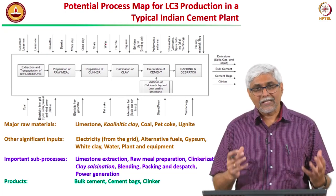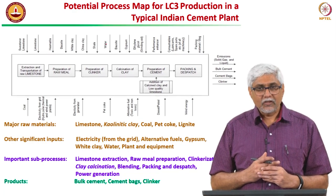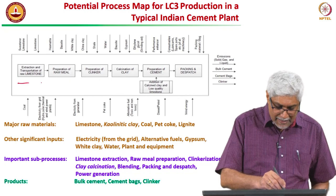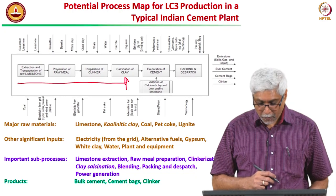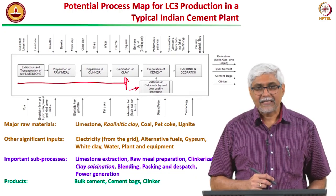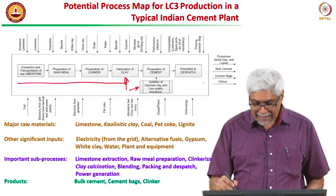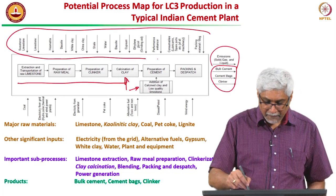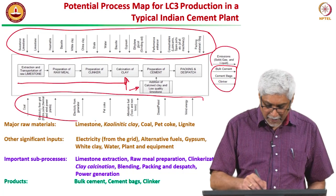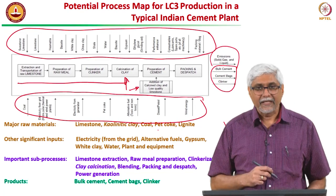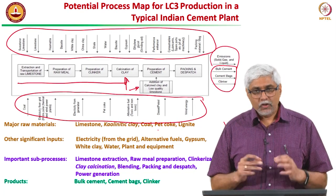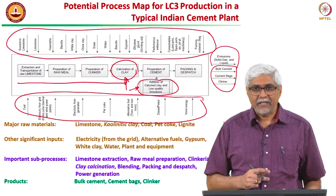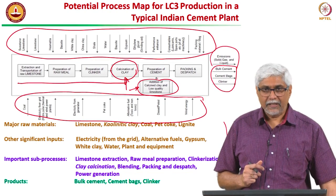We saw the process map for Ordinary Portland Cement and Portland Pozzolana Cement earlier. For LC3 in a typical Indian plant, the processes would be the same, but we will have the calcination of clay as a new process. The calcined clay and some limestone are added in the grinding phase to give us LC3. This seems reasonable from pilot production done in India within this project.